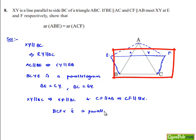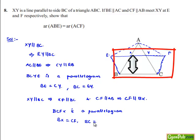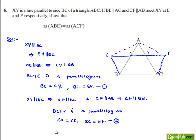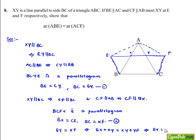In a parallelogram, opposite sides are parallel and equal. Therefore, BX is equal to CF and BC is equal to XF. In the first step we got BC is equal to EY, and in the second step we got BC is equal to XF. Therefore, EY is equal to XF, which means EX plus XY equals XY plus YF, and that implies EX is equal to FY.